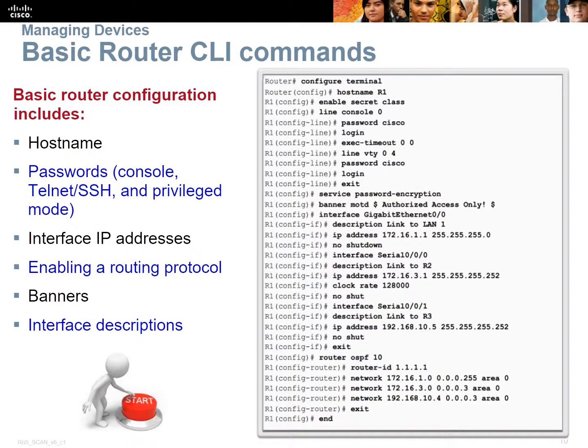Configuring your router is exactly the same as what we've seen in the previous module. First, give it a hostname, set up all your passwords and security, configure IP addresses, set up a routing protocol, banners, and interface descriptions. This is nothing new — all part of CCNA 2 or Routing Switching Essentials. You've done this many times before. Always remember your interface descriptions — always handy.